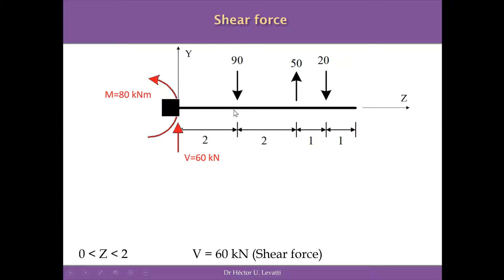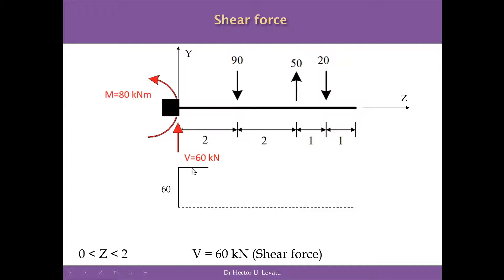We are going to study this beam in several intervals. The first is the interval between 0 and 2 meters. In the middle of this interval, the summation of shear forces to the left is only 60 kN — the only force appearing to the left side of the structure. The moment doesn't count because it's not a force. Since 60 kN is positive, the shear force is constant at 60 kN throughout this interval.